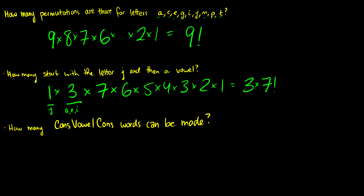So again, first we fix the first letter, and then we say we need to pick a vowel, and then the rest can be whatever letters they want to be.